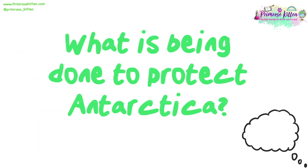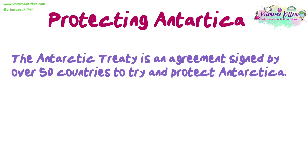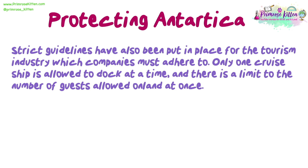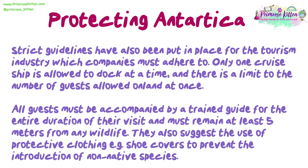What is being done to protect Antarctica? The Antarctic Treaty is an agreement signed by over 50 countries to try and protect Antarctica. It covers all damaging activities such as fishing, where quotas are set and monitored, as well as banning mineral extraction. It is also illegal to complete military training of any kind or leave any waste. Strict guidelines have been put in place for the tourism industry: only one cruise ship is allowed to dock at a time, there is a limit to guests allowed on land, all guests must be accompanied by a trained guide and remain at least five metres from any wildlife, and they suggest the use of protective clothing such as shoe covers to prevent the introduction of non-native species. There are lots of documents available on the Antarctic Treaty, so we recommend doing some research and building a case study as this is a commonly asked exam question.